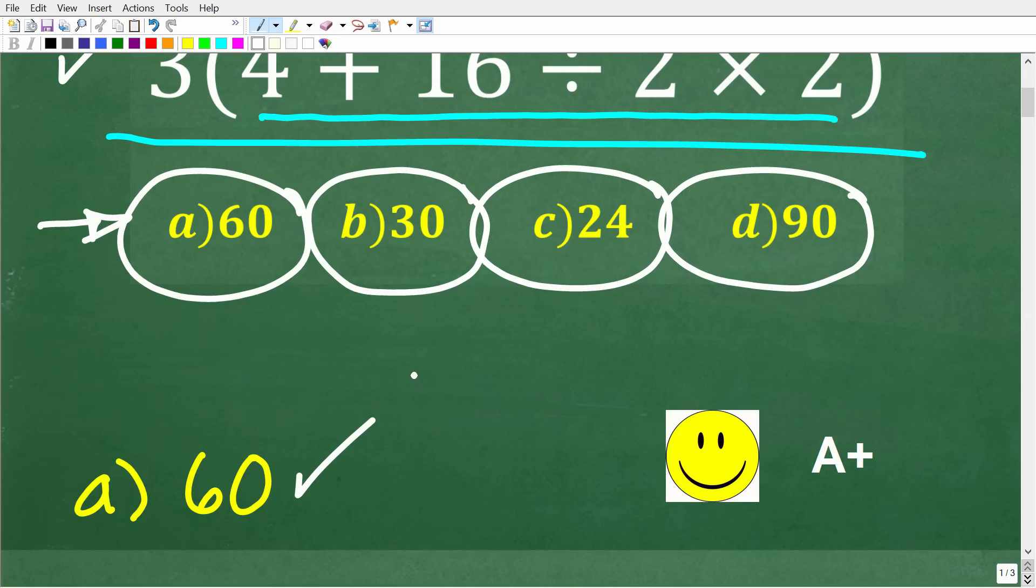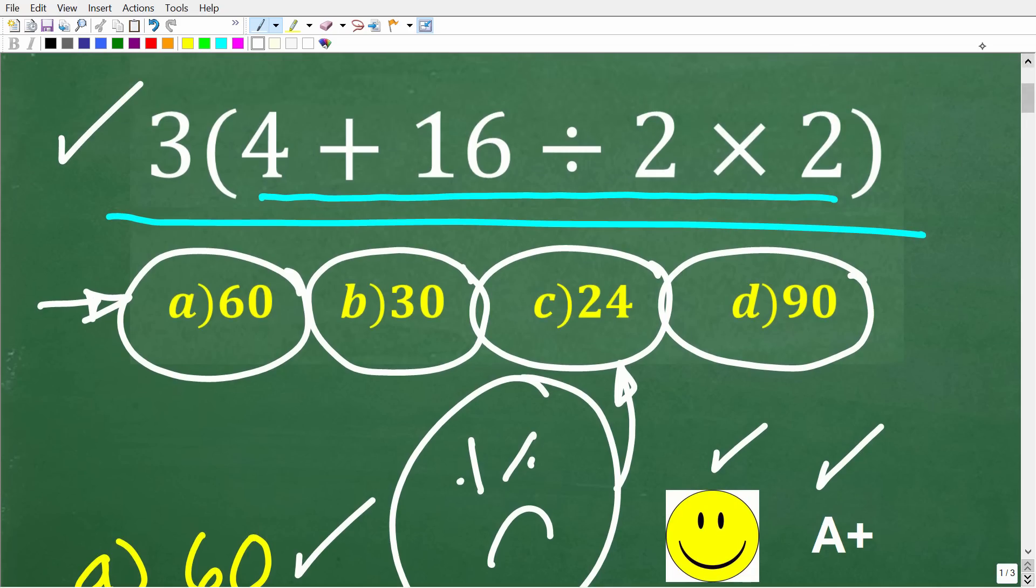All right, now, if you got this right and you did not use a calculator, you definitely get a happy face and an A+. If you're like, Mr. YouTube Math Man, I think you did something wrong because I got 24, or maybe you got another number, well, if that's the case, you did something wrong. All right, so this is a good opportunity to learn something. And you probably made a very common error.